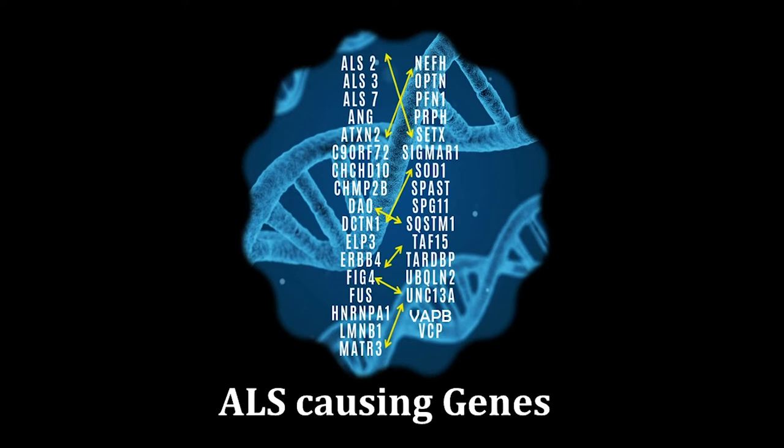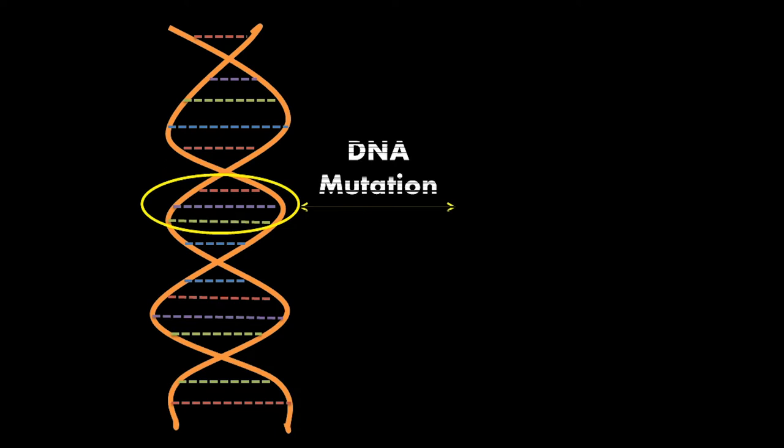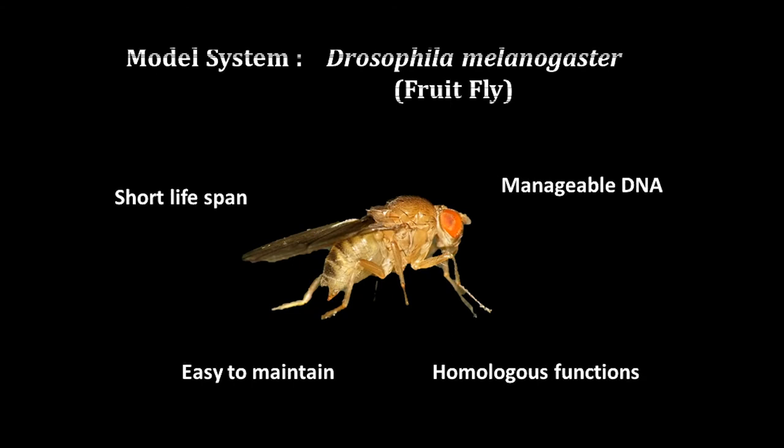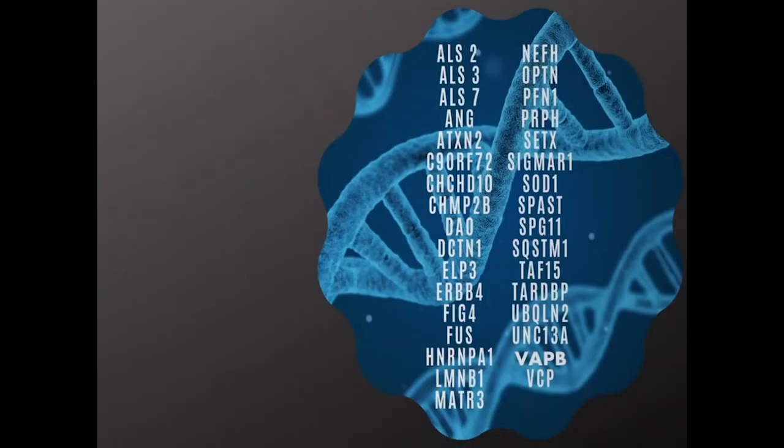Mutations in around 36 genes individually are so far known to cause ALS, and recent studies suggest the possibility of interaction among these genes in ALS-affected patients. The general way to study the function of a gene is by using mutation as a tool — any change in the DNA is called a mutation. Worldwide, various research projects are being carried out on these genes in model systems like Drosophila, commonly known as the fruit fly, which enables easy comparison with human functions and is easy to maintain in the lab.